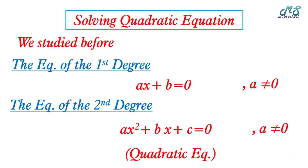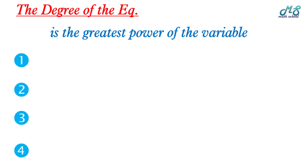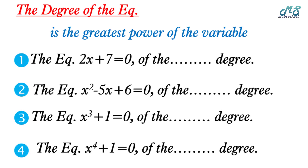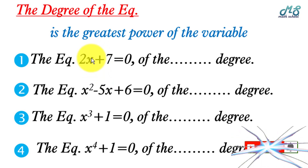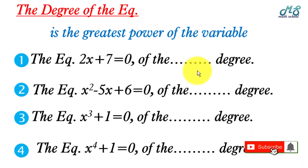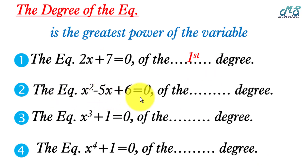It's called the quadratic equation. How can we determine the degree of the equation? The degree of the equation is the greatest power of the variable. For example, the equation 2x plus 7 equals zero — what is the greatest power of x? The greatest power is one, so it is an equation of the first degree.